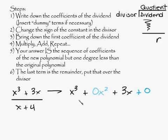So let's go ahead and write down our coefficients. We've got, in this case, 1, 0, 3, and 0. And we're going to be synthetically dividing by... We're going to change the constant in the divisor to negative. We're going to change the sign, so this is going to be negative 4. So let's go ahead and work this out.